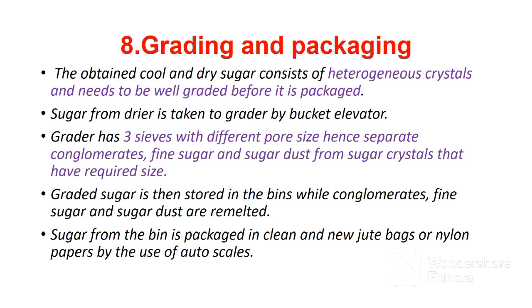The final stage of sugarcane processing is grading and packaging. The obtained cool and dry sugar consists of heterogeneous crystals and needs to be well graded before it is packaged. Sugar from the dryer is taken to the grader by bucket elevator. The grader has three sieves which separate conglomerates, fine sugar, and sugar dust from sugar crystals that have the required size. Graded sugar is then stored in bins, while conglomerates, fine sugar, and sugar dust are remelted. Sugar from the bins is packaged in clean and new jute bags or nylon papers using auto scales. Packaged sugar is stored in godowns before it is sold to the market.